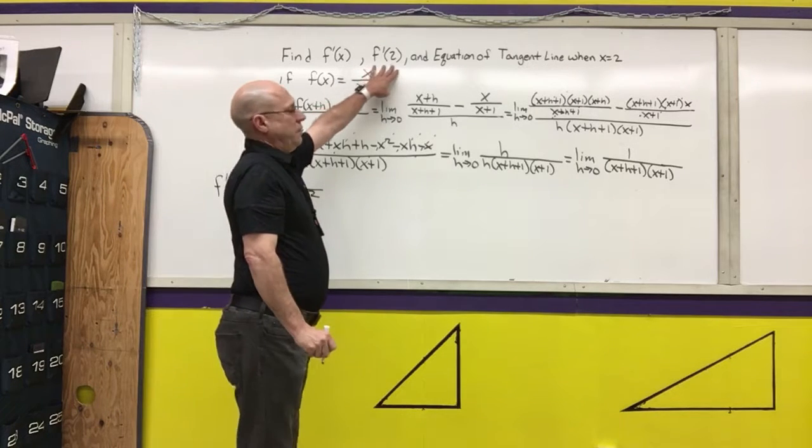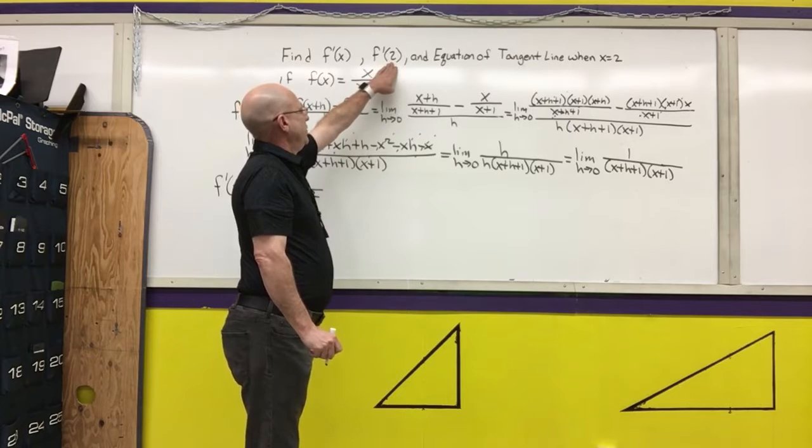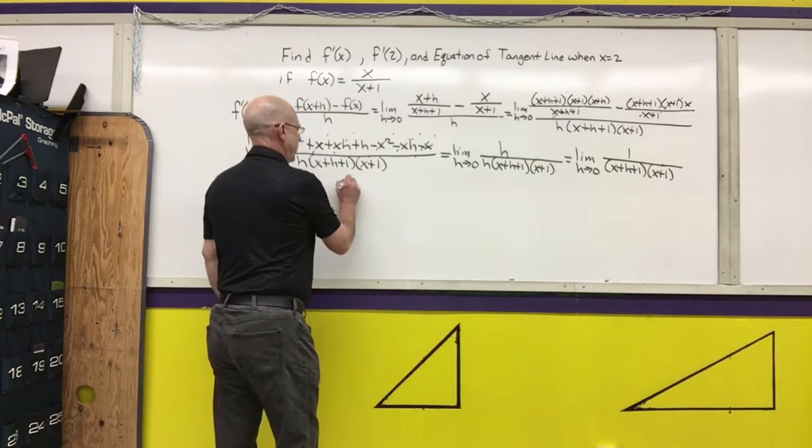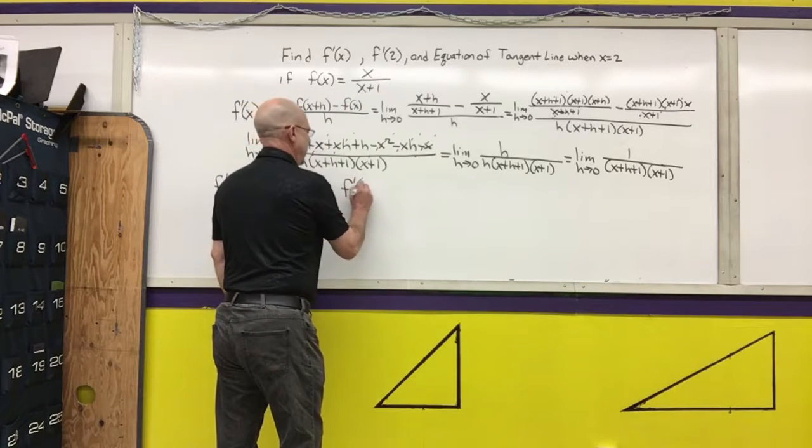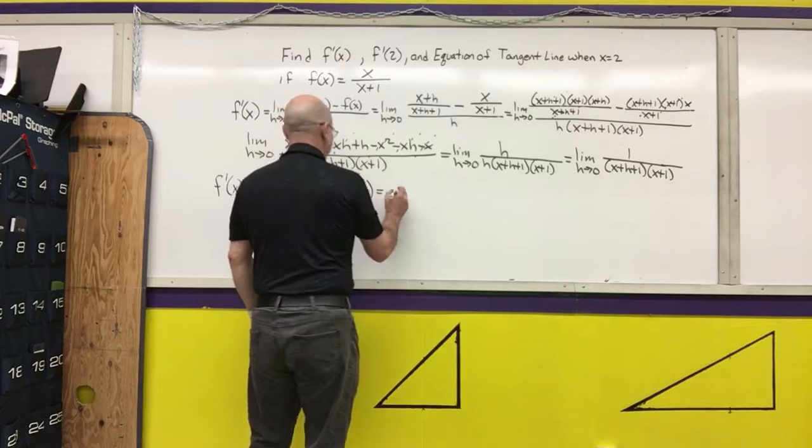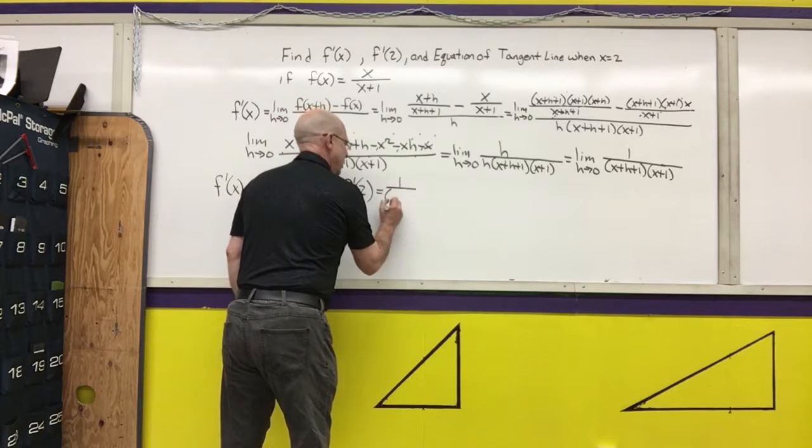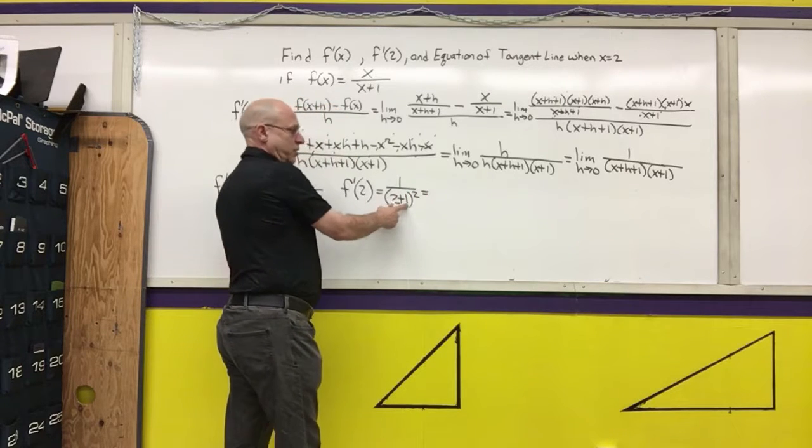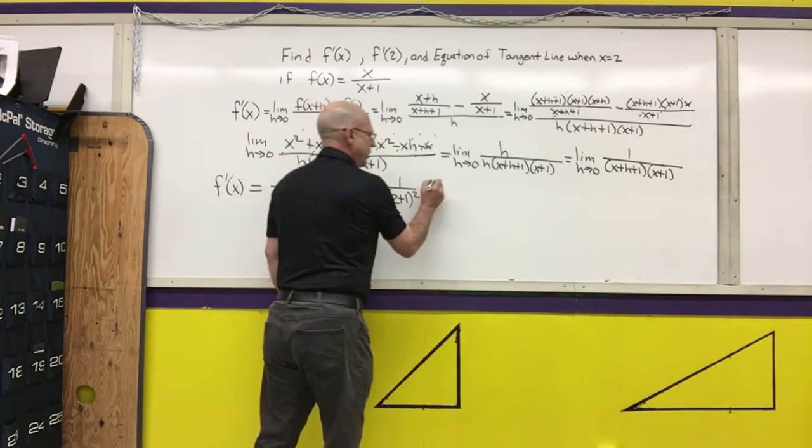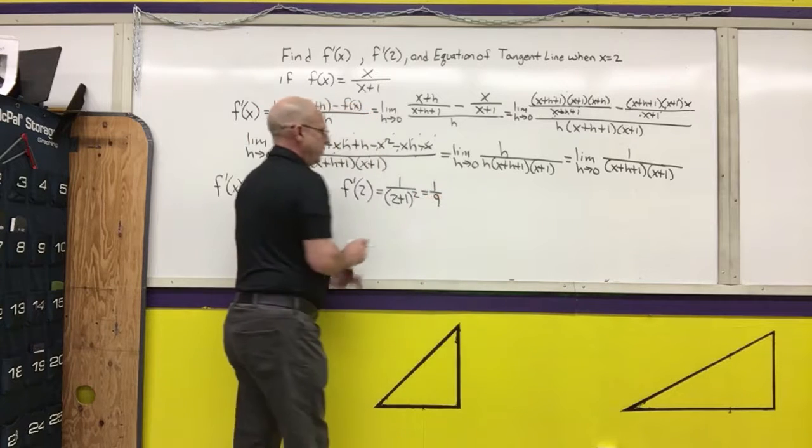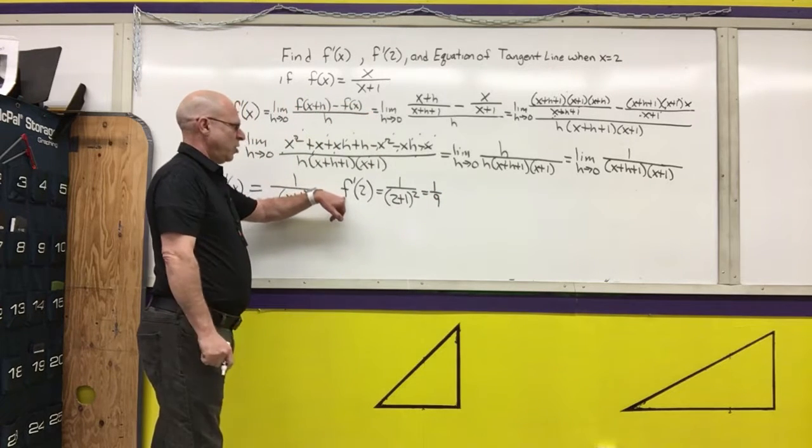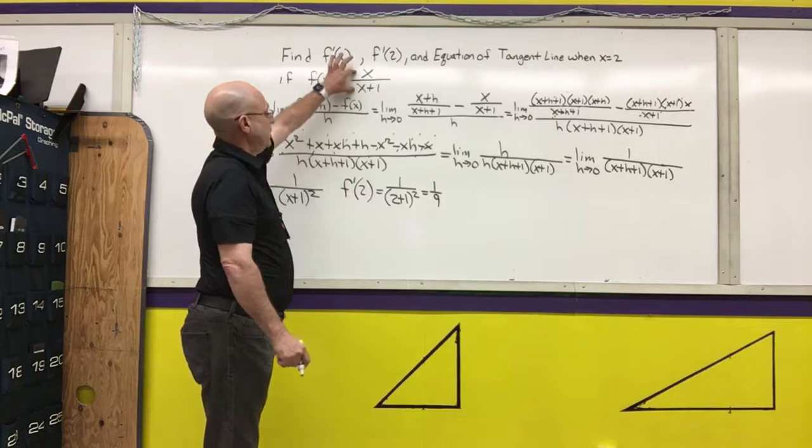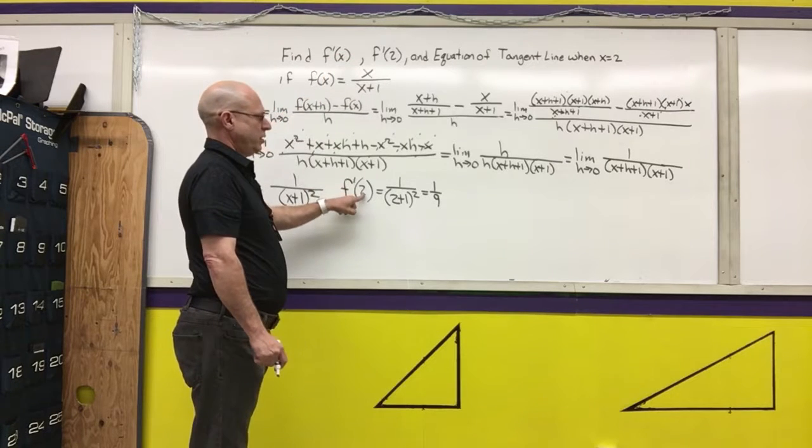The next part says to evaluate f prime of x when x equals 2. So f prime, or the derivative at 2, is equal to 1 over 2 plus 1 squared. 2 plus 1 is 3, 3 squared is 9, so I get 1/9. Remember that this is the slope of the tangent line to this function when x equals 2.